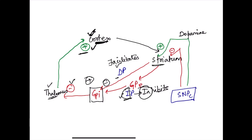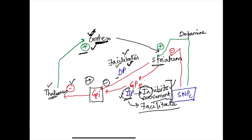Now consider the effect of dopaminergic neurons coming from the substantia nigra pars compacta. Dopamine facilitates the direct pathway, further facilitating movement, and it also inhibits the indirect pathway. Since the indirect pathway inhibits movement, dopamine inhibiting it further facilitates movement. In short, the role of dopamine is to facilitate movement by facilitating the direct pathway and inhibiting the indirect pathway.